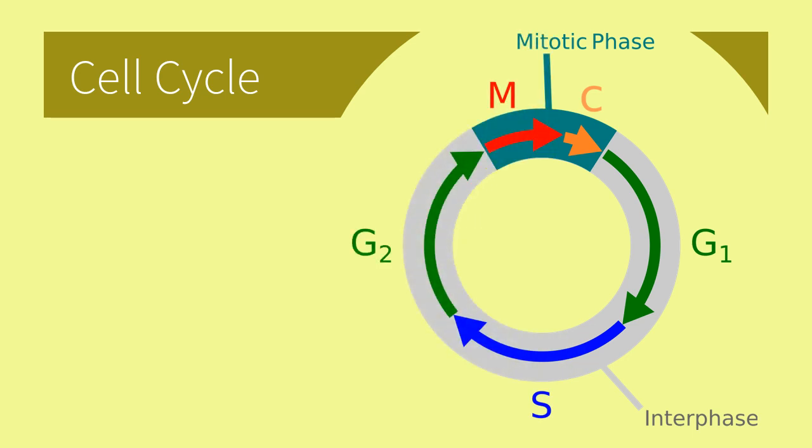Here is a diagram of the cell cycle. The gray part of the circle is interphase, and it consists of three sub-phases: G1, S, and G2. G stands for growth. So in the G1 phase, the cells grow in size and make important molecules.